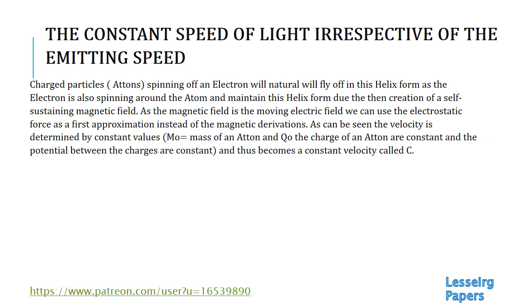These charged particles — atoms — spinning off the electron will naturally fly off in a helix form, as the electron is also spinning around the atom. Therefore, they start creating their own magnetic field. This magnetic field then forces the other atoms to revolve around it, creating basically a flying helix. As the magnetic field is the moving electric field, we can use the electrostatic force as the first approximation instead of the magnetic derivations. The electrostatic force would then keep the centrifugal forces in check.